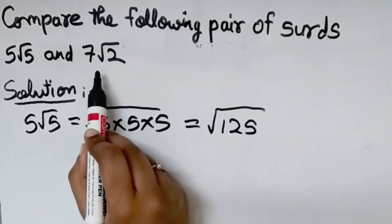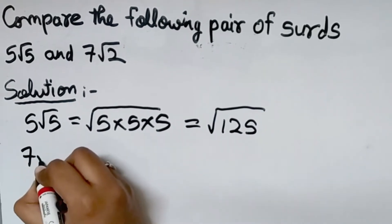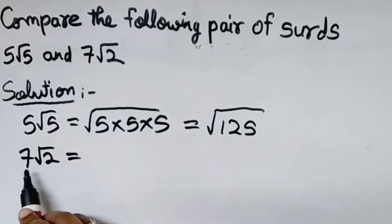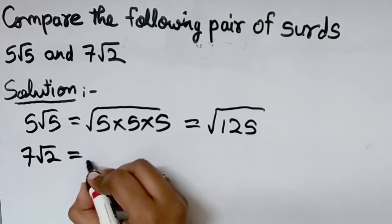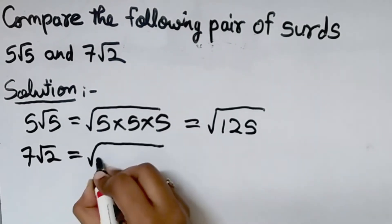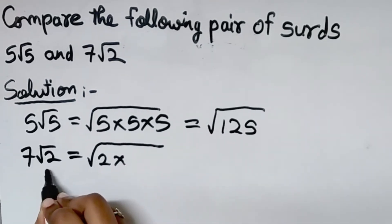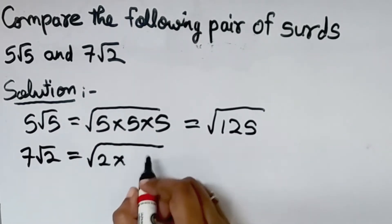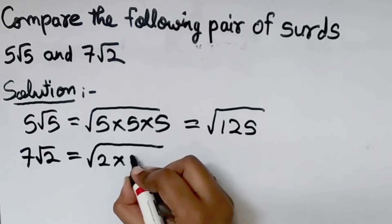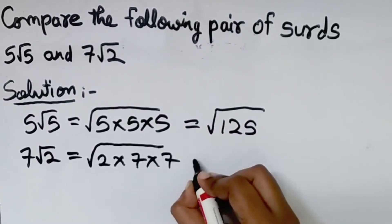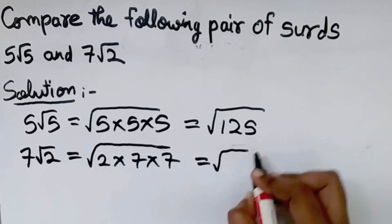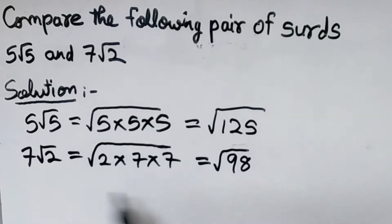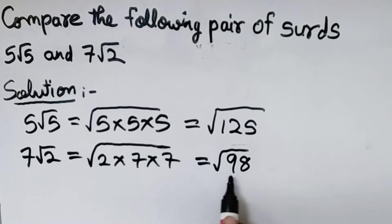Now for 7 root 2, we do the same thing. Here 2 is inside the square root sign but 7 is outside. So we take 7 inside the square root by multiplying it two times: square root of 2 into 7 into 7. That gives square root of 2 into 49, which equals square root of 98. So 7 root 2 is square root of 98.